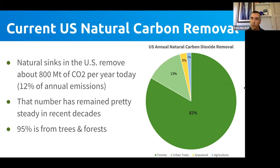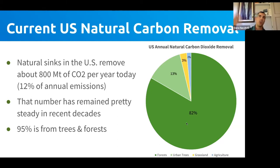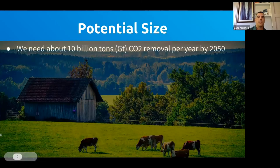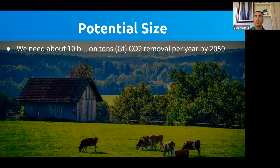All of these carbon sinks have the potential to be boosted significantly with policies that encourage increased carbon storage and removal. Forests and urban trees are already doing the most work, so they're a good place to focus first. Roughly speaking, we need to remove about 10 billion tons — 10 gigatons — of CO₂ per year by the year 2050.